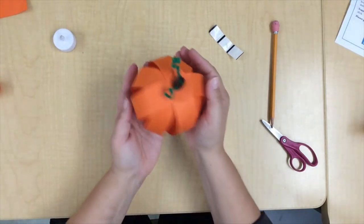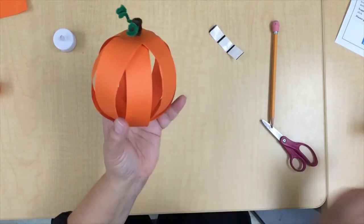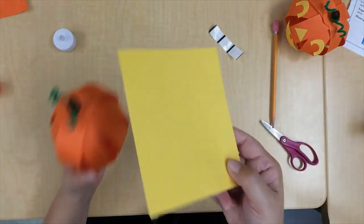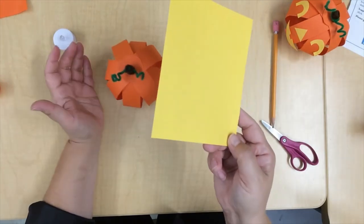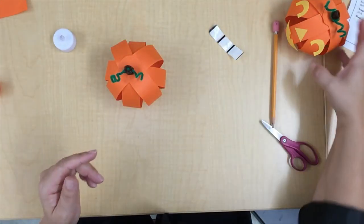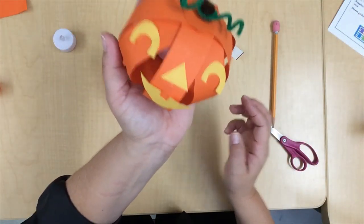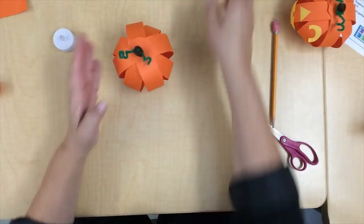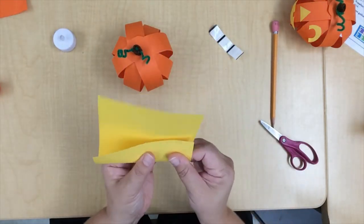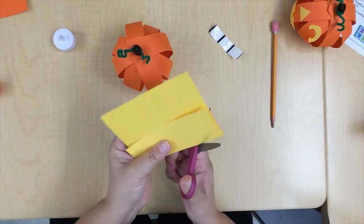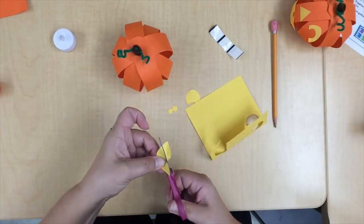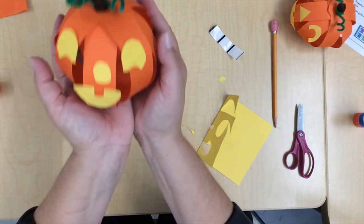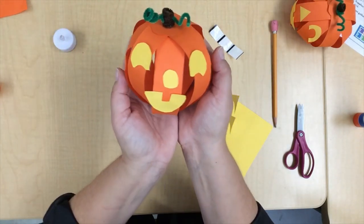You can leave it just like this if you want, or you can add a face to it with your yellow paper. So design eyes, a nose, a mouth, whatever you'd like with your yellow paper and then glue them on to your pumpkin. So decide where you'd like your face, just as if it were a real pumpkin, and make some eyes, a nose, and a mouth. And then glue them on. And there's my pumpkin, my jack-o-lantern.